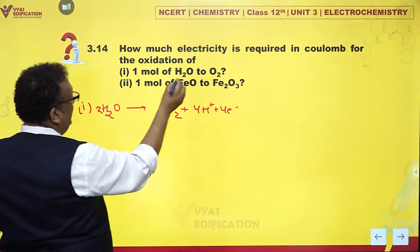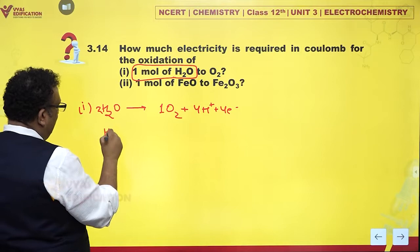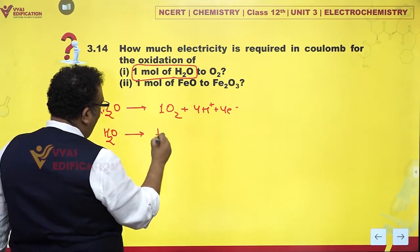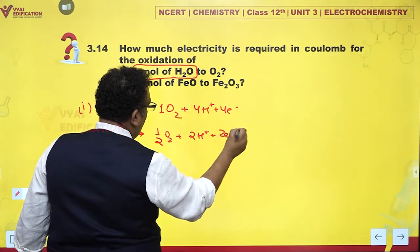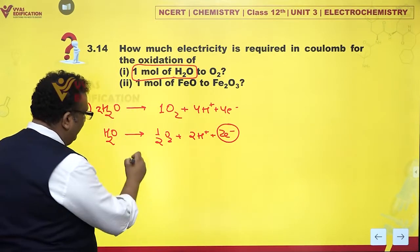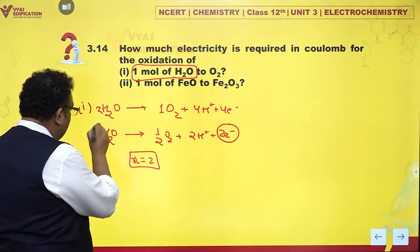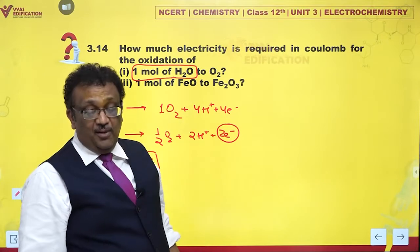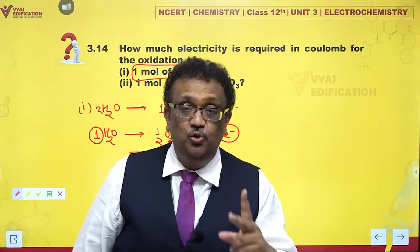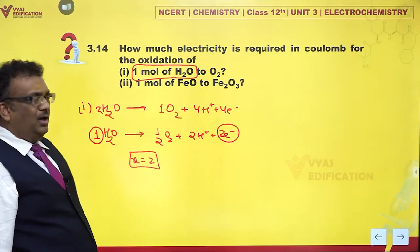For two moles, now I need H2O one mole. So if I just change the balancing, I have H2O giving me half O2 plus 2H+ plus 2 electrons. So what is the value of n? The value of n is 2. Why? Because I am interested in H2O, and with one mole of H2O, the value of your number, the coefficient of electrons is 2. So the value of n is 2 in this case.